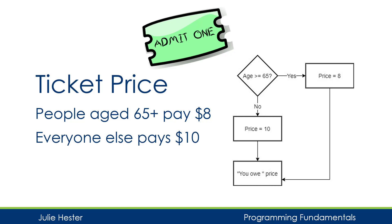With that example, if the temperature was greater than 50, we didn't do anything special. But sometimes we want to do either/or — one thing or another, like calculating the price of a ticket. Everyone age 65 and older pays one price, and everyone else pays a different price. In the flowchart, I'm at the diamond decision shape comparing age to 65. If age is greater than or equal to 65, I branch to the right and set price to 8. If it's false, I go down to price equal 10. After setting the price to either 10 or 8, I go to the line that displays 'you owe price', which executes regardless of which price was set.